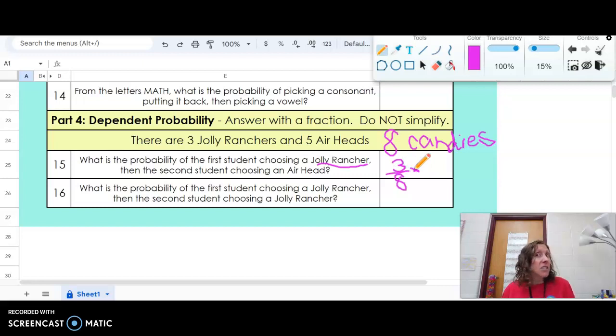Now, if that student takes away a Jolly Rancher, there's no longer eight candies to choose from. Now there's only seven. So then the probability of the second student choosing an Airhead, well, there's five of them out of the seven candies that are left. For this part, the denominator is going to decrease by one each time because something is being taken away. So if we multiply straight across on top, three times five is 15, and eight times seven is 56.